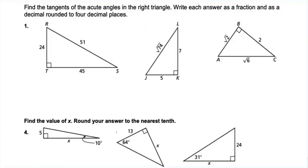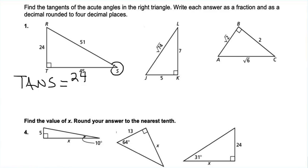Find the tangent of the acute angles in the right triangle, writing each answer as a fraction and as a decimal rounded to four decimal places. Starting with angle S: what is opposite of S? That is 24. What is adjacent? That is 45. So the tangent of S equals 24 over 45.